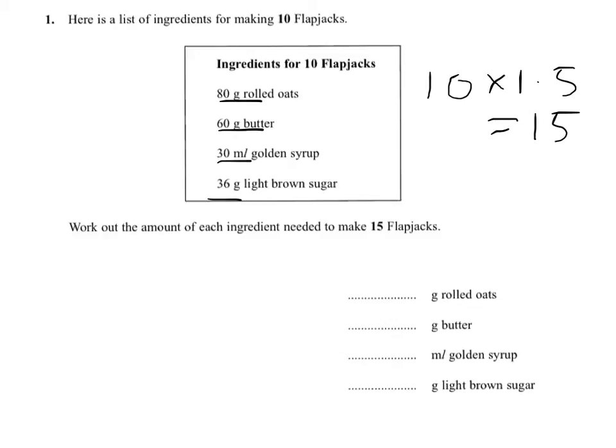Now, without a calculator, a good way of doing this is to find out half of this and then simply add it on to what you had to start with.